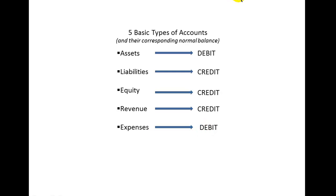Now what do these words debit and credit mean? By themselves they really don't have any meaning — they take on meaning relative to what you're talking about. So if you're talking about an asset, you have to memorize that if you want to increase that asset balance, you're going to debit that account. Conversely, if you want to decrease it, you'll credit it. Same with liabilities — to increase it you credit it, and equity — to increase it you credit it.